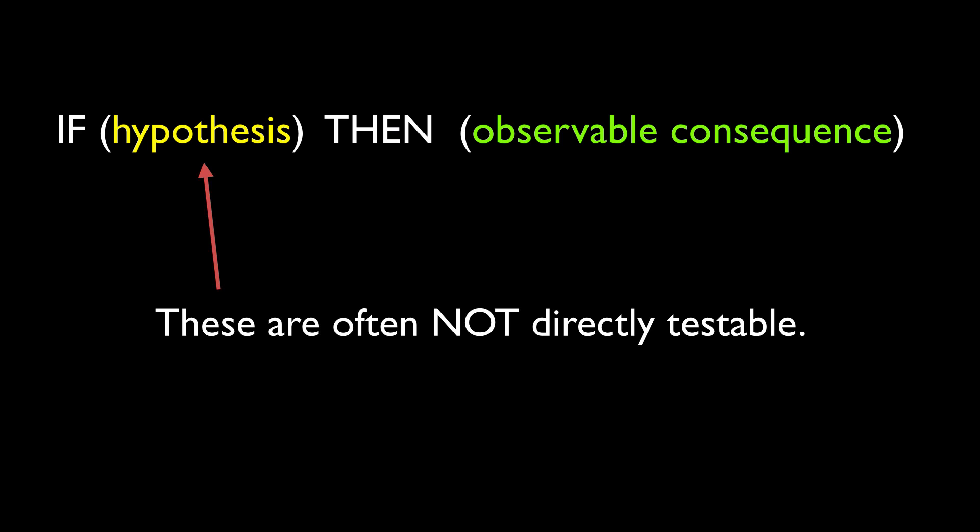The logic is straightforward. We say that if this hypothesis were true, then it would have such and such observable consequences. Then we test to see if those consequences are observed or not. And then we use the results of those tests to infer something about the status of the original hypothesis and how it stacks up against other competing hypotheses.